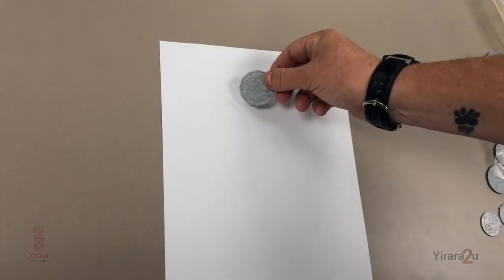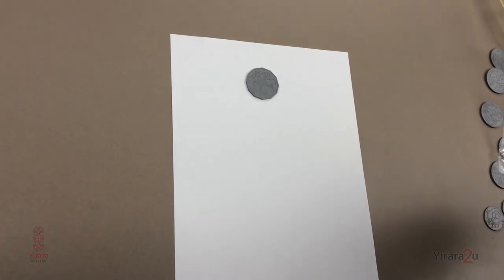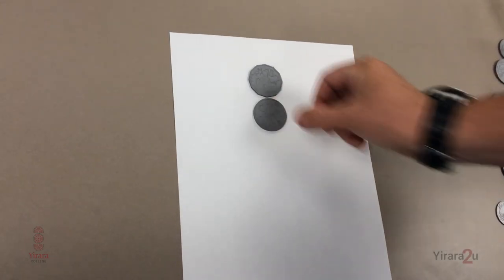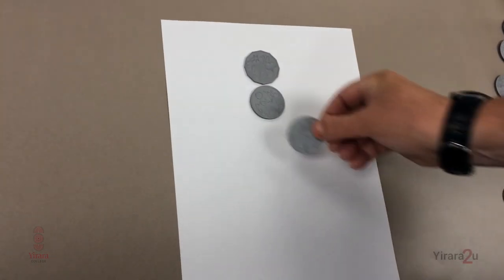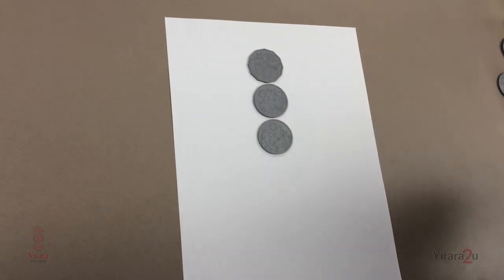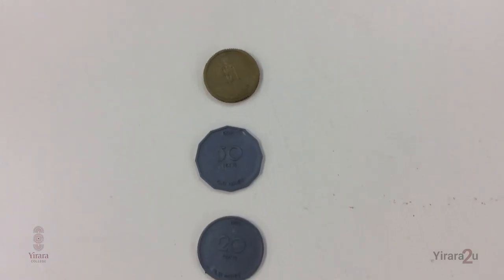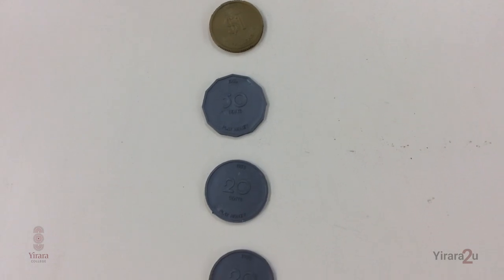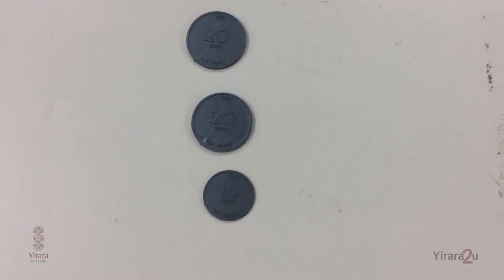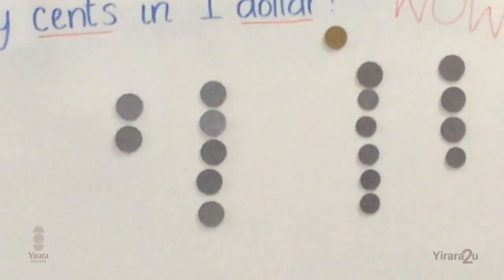One more lot of coins I've got here: 50, a 20, a 20, and a 10. So I've got 50, 70, 90, 100 — equals a dollar. See how many different ways you can make a dollar.